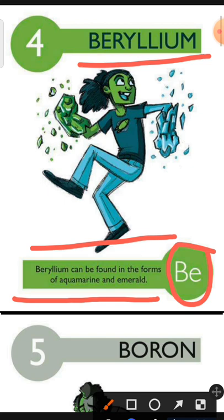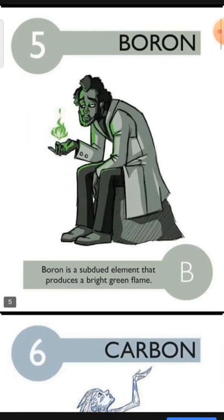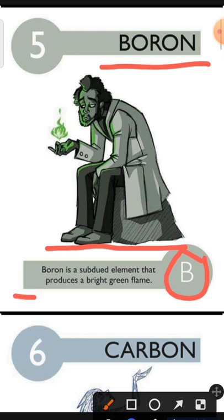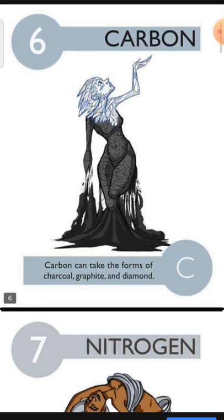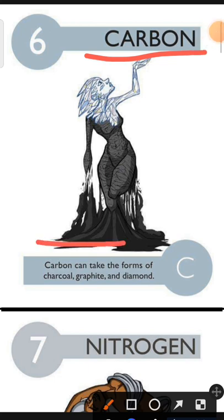Element number 5 is Boron. The characteristic of Boron is: Boron is a subdued element that produces a bright green flame. Element number 6 is Carbon. The characteristic of Carbon is: Carbon can take the forms of Charcoal, Graphite and Diamond.